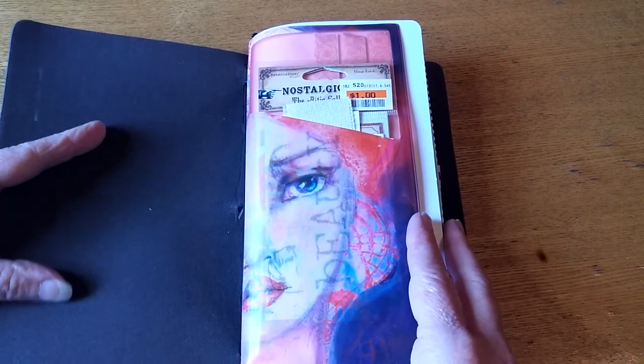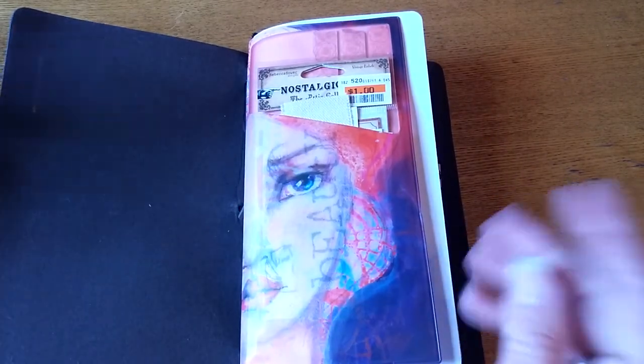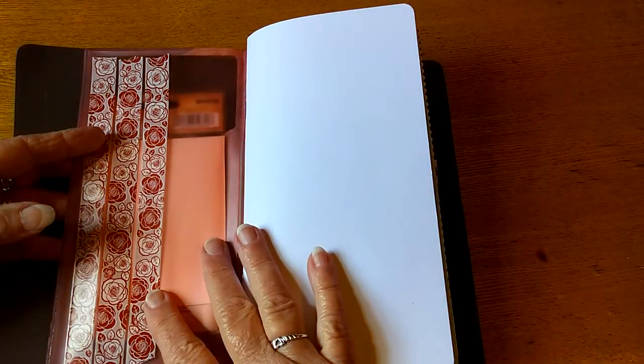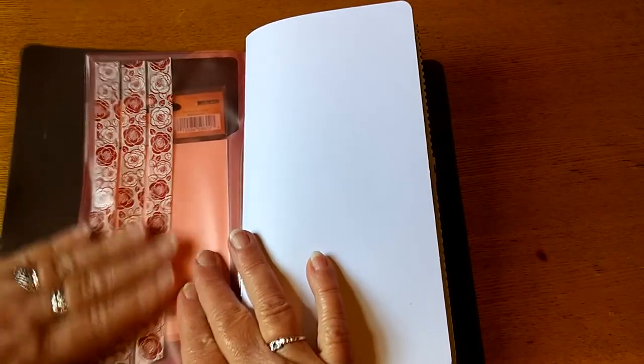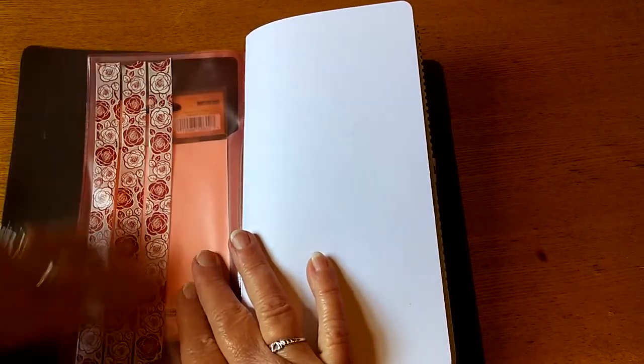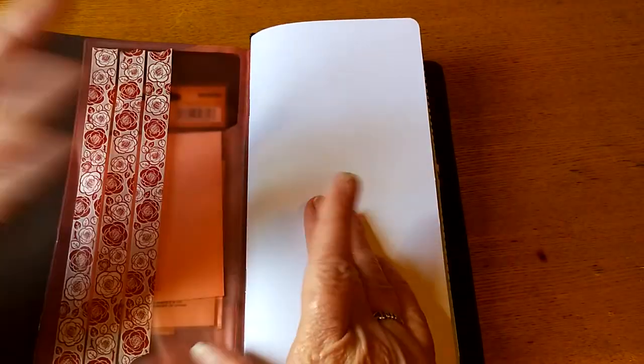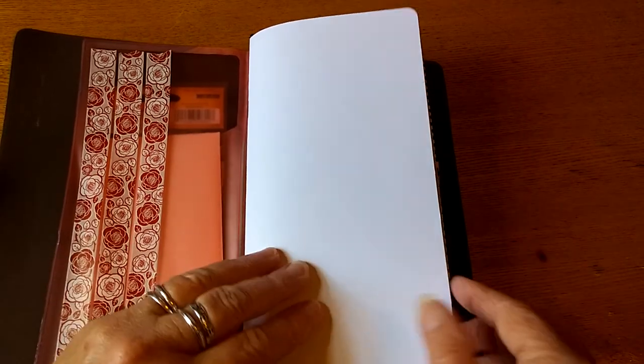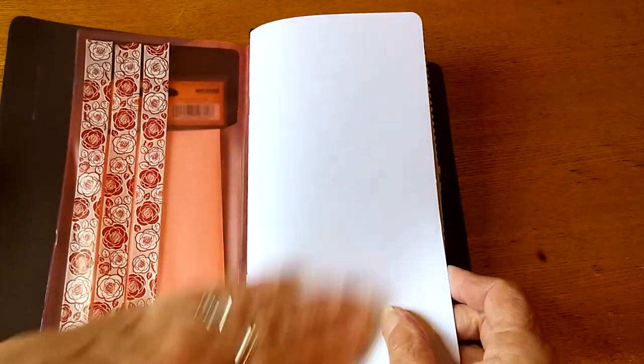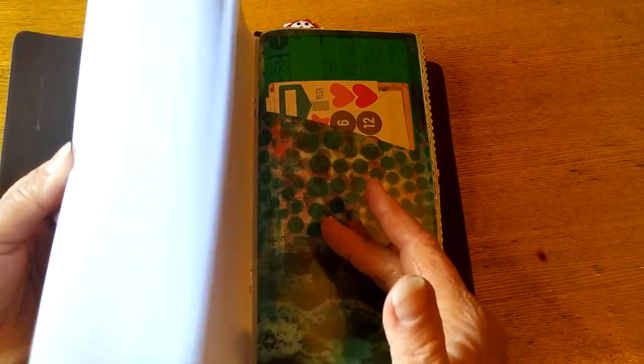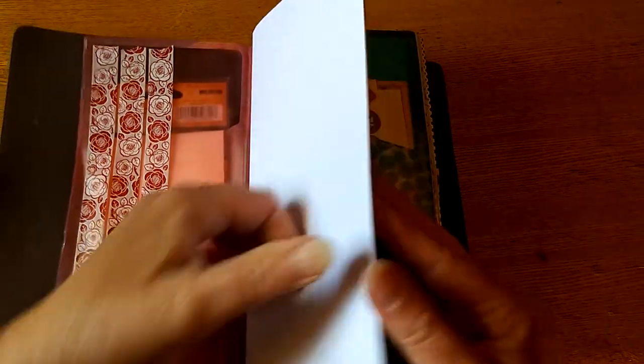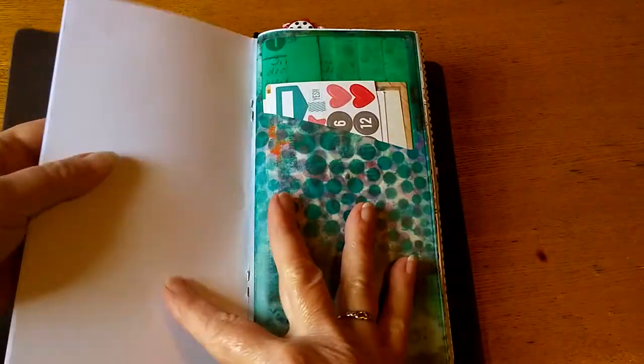I decided instead of buying the Jane Davenport washi holder, I would just throw some washi on the back of the envelope. It works, and I'm not spending six bucks on a washi holder and a stencil I'll probably never use. This is the plain paper insert that comes with the book. It's got a fairly thick little cover and your pages inside. It's not bad paper either.